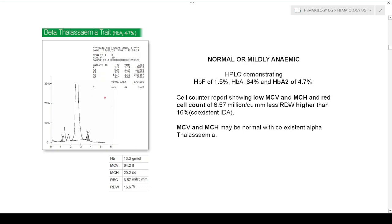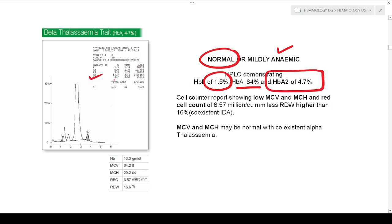This is how the HPLC chart for beta thalassemia trait looks. The patient might have a completely normal CBC or be mildly anemic. HbA is normal around 84%, HbF is less around 1.5%, and most importantly HbA2 is around 4.7% — you can appreciate this is the HbA2 graph. HbA2 has increased to approximately 4.7%. MCV and MCH are low, and the RBC count is 6.57 million per cubic millimeter.